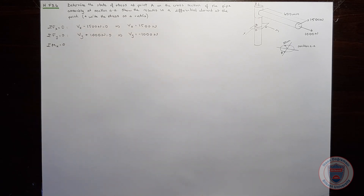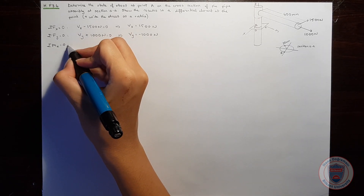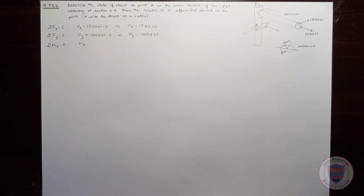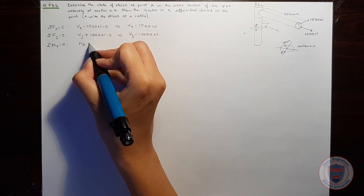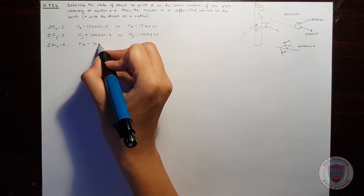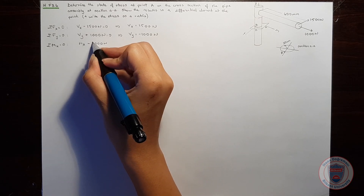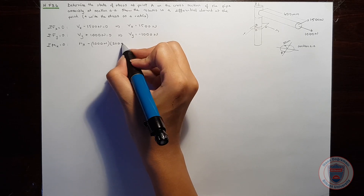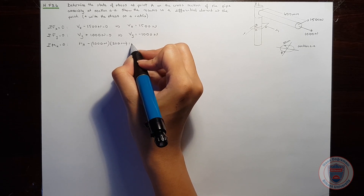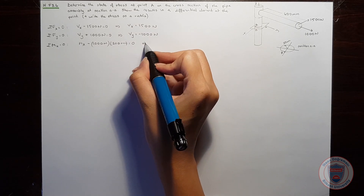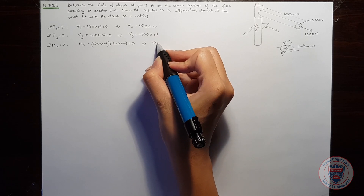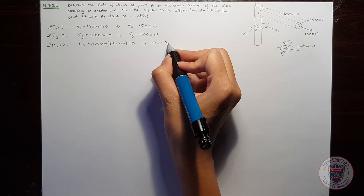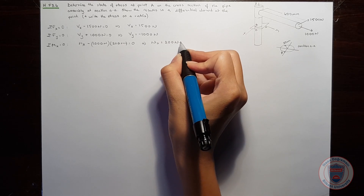The sum of moments in the x direction will be zero. We will have Mx minus 1000 newtons times 200 millimeters equals zero, so that Mx will be equal to 200 newton-meters.